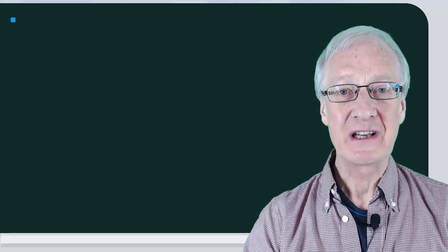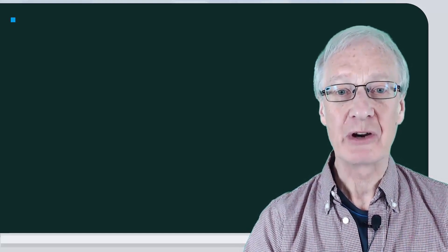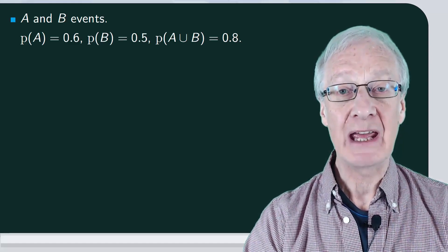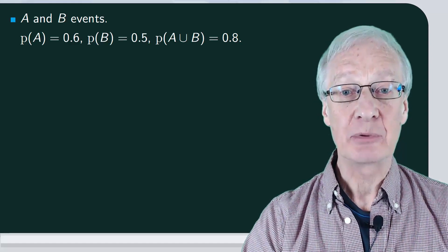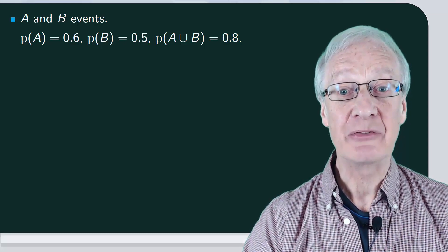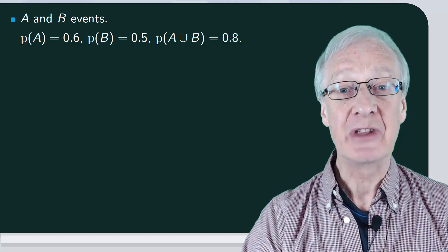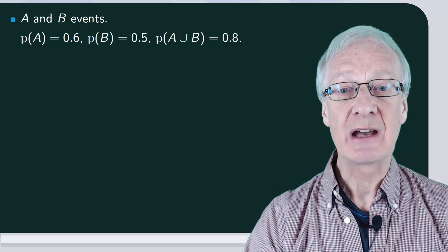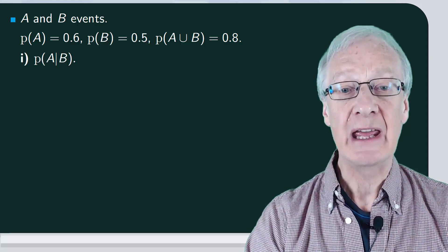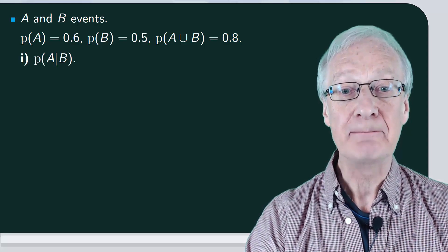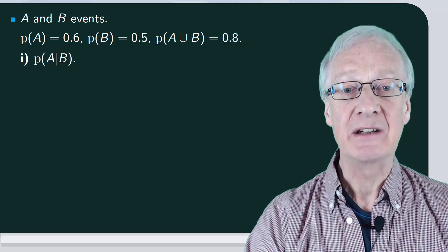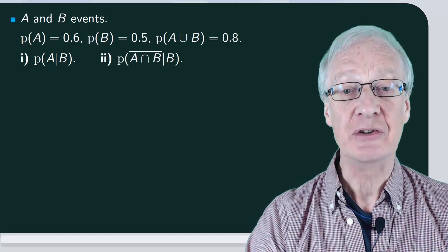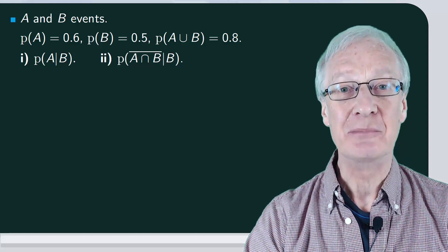We'll consider a random experiment in which there are two possible events, A and B. We're given that the probability of A is 0.6, the probability of B is 0.5, and the probability of their union is 0.8. First, we're going to calculate the probability of A conditional on B, and second, the probability of the complement of A, intersection B, conditional on B.